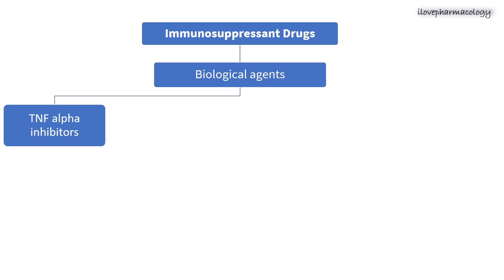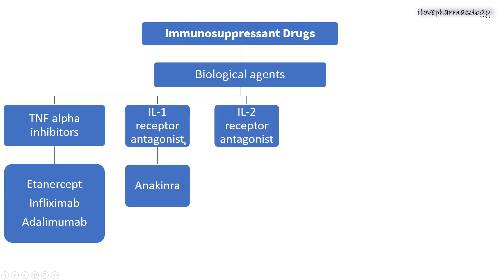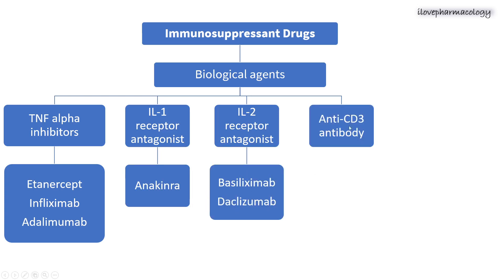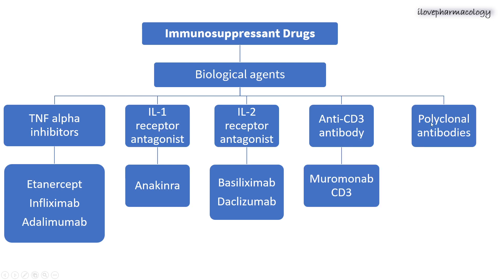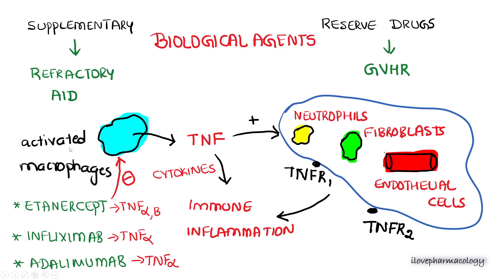Under biological agents you have tumor necrosis factor alpha inhibitors — examples are etanercept, infliximab, and adalimumab. Under interleukin-1 receptor antagonist you have anakinra. Under interleukin-2 receptor antagonist you have basiliximab and daclizumab. Under anti-CD3 antibody you have muromonab-CD3. Under polyclonal antibodies you have antithymocyte antibody and Rho immune globulin.